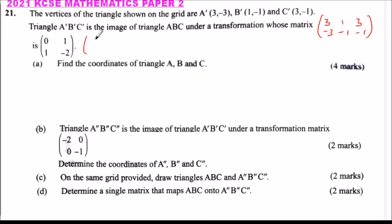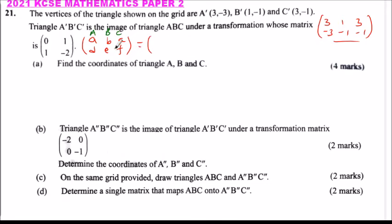We say when you multiply the transformation matrix [0, 1; 1, -2] by the matrix of triangle ABC — with elements A, B, C in the first row and D, E, F in the second row — it should give us the image matrix [3, 1, 3; -3, -1, -1]. That is correct.